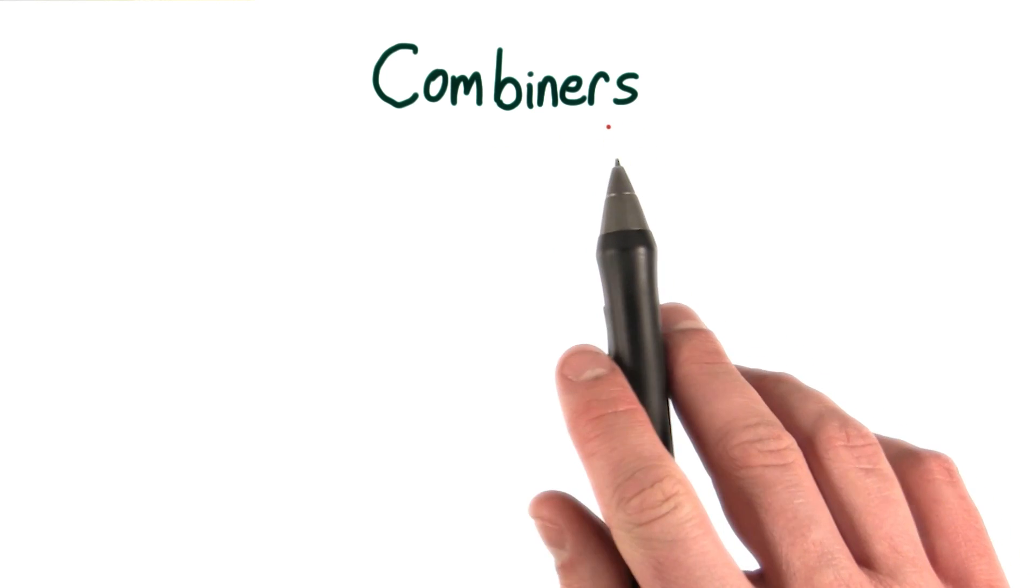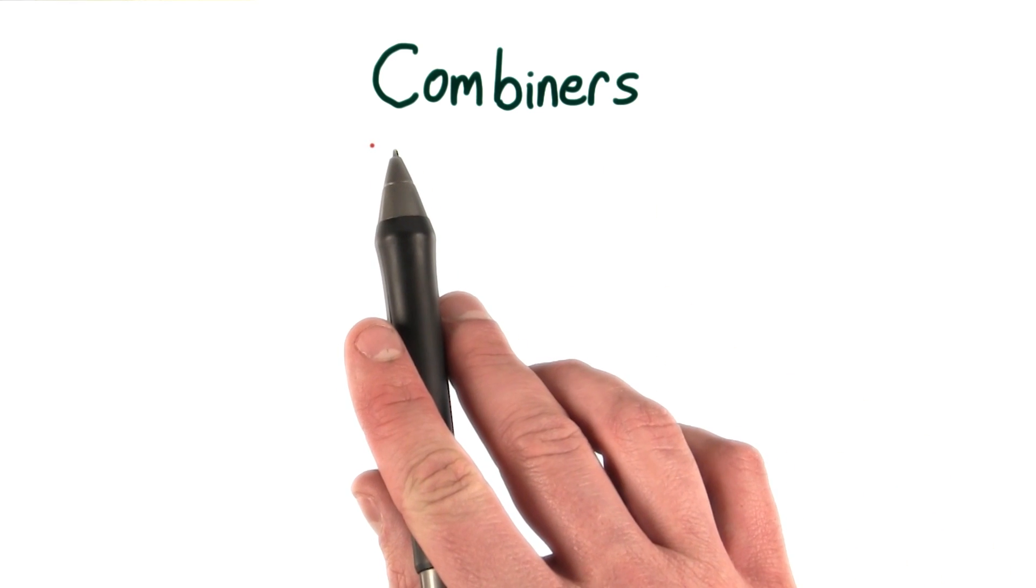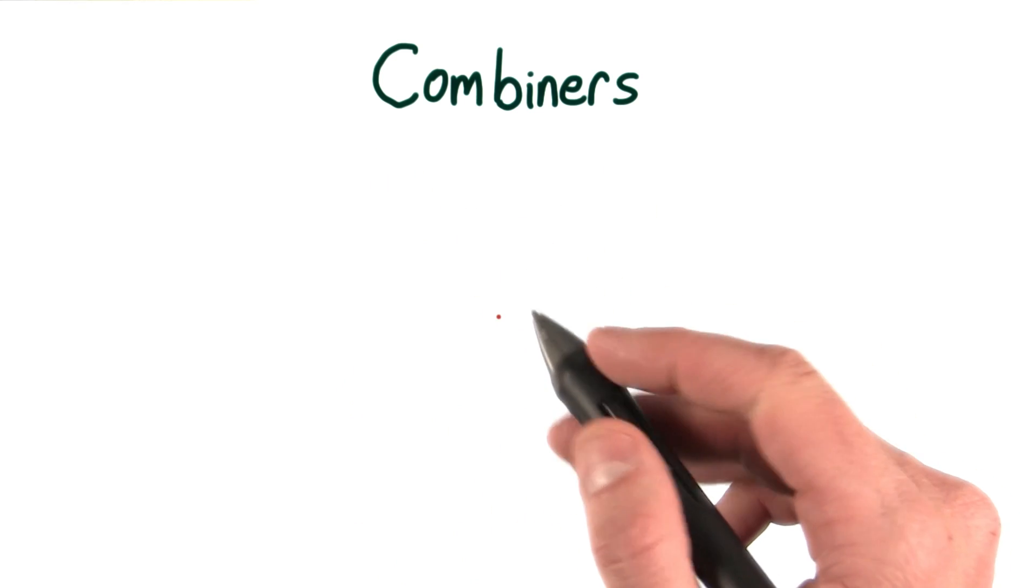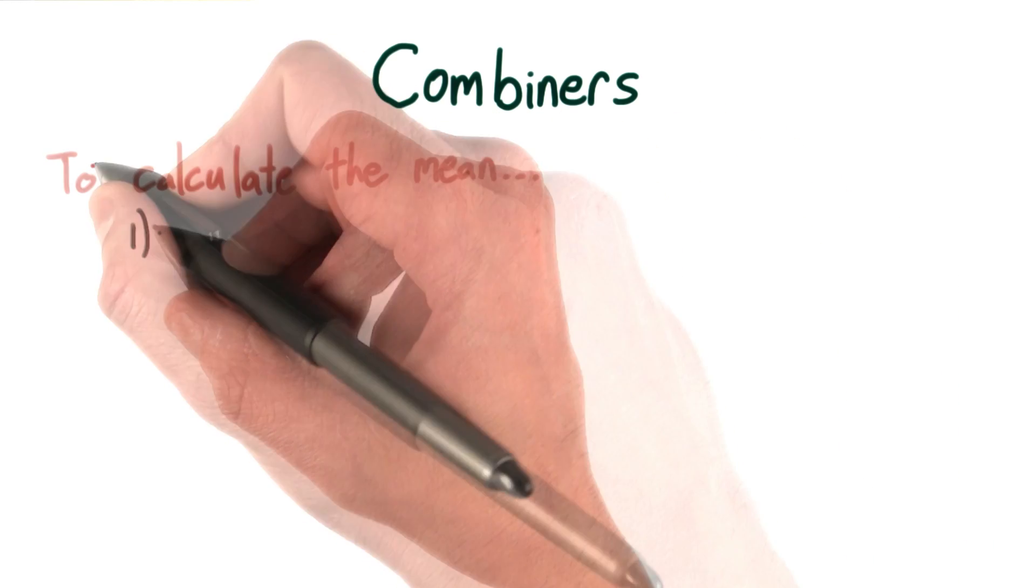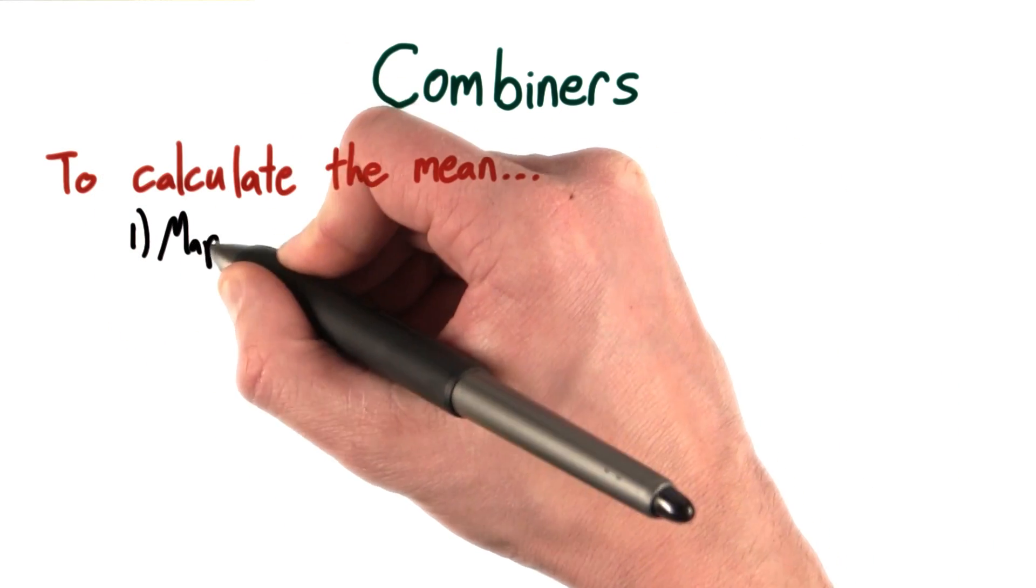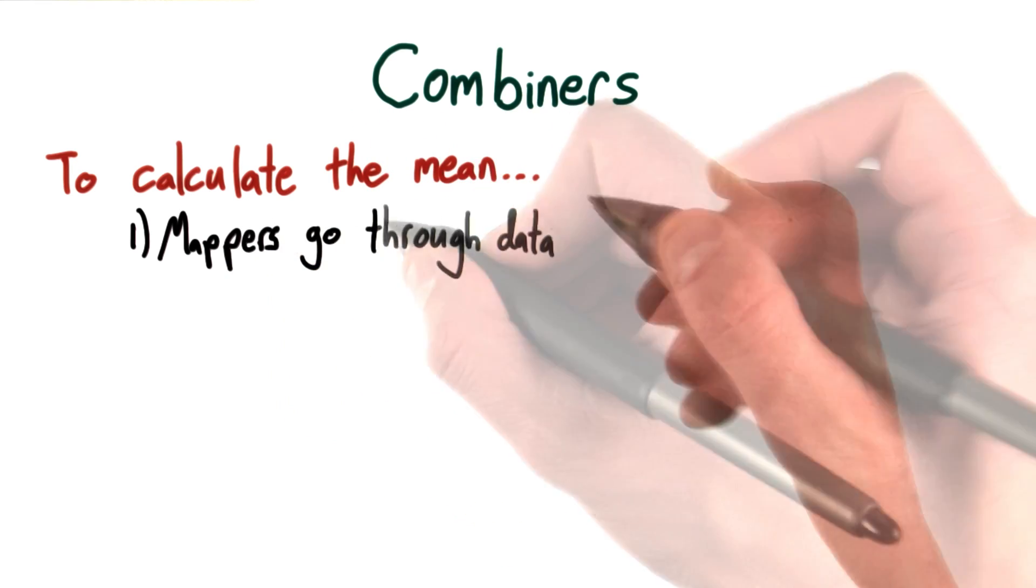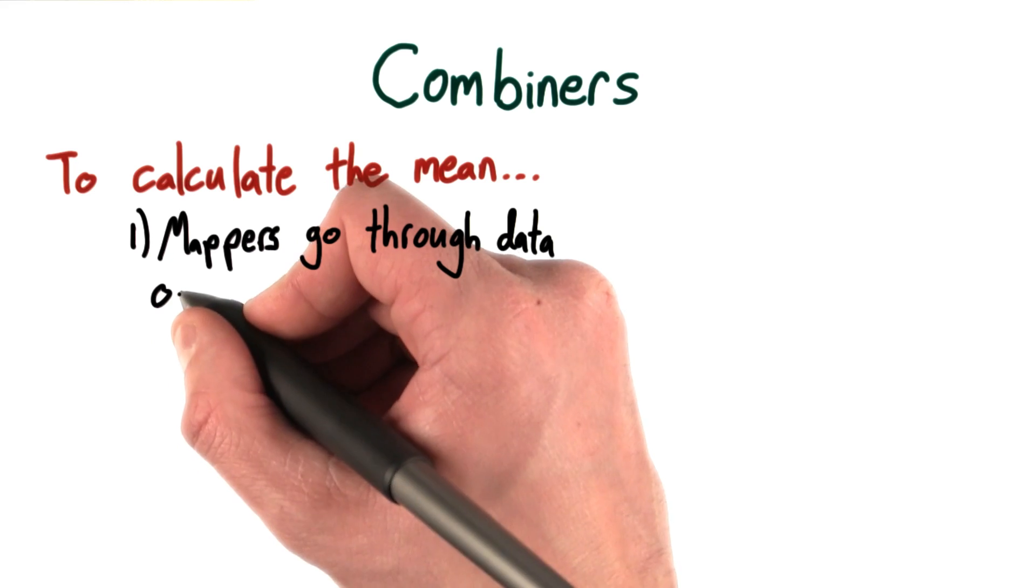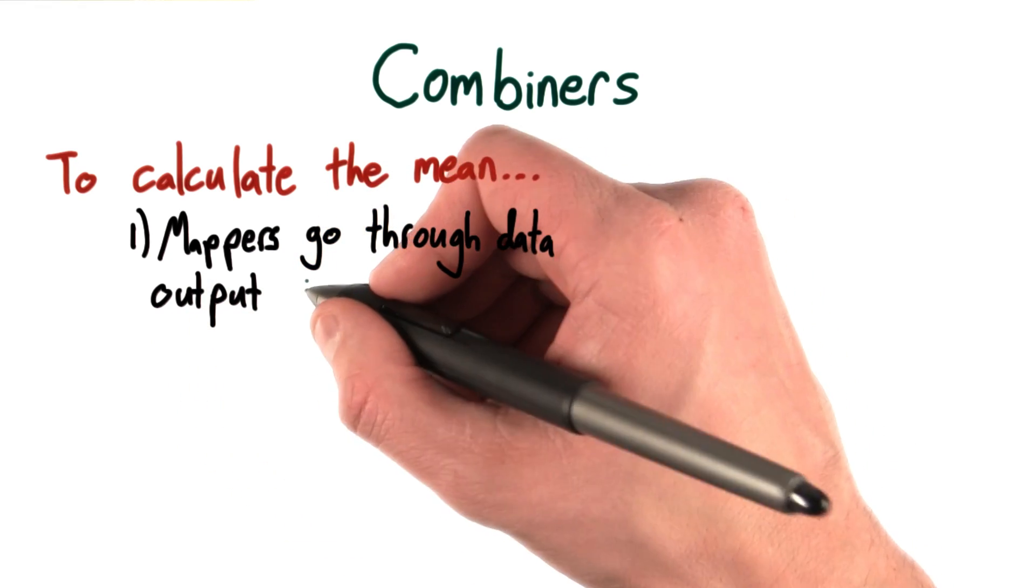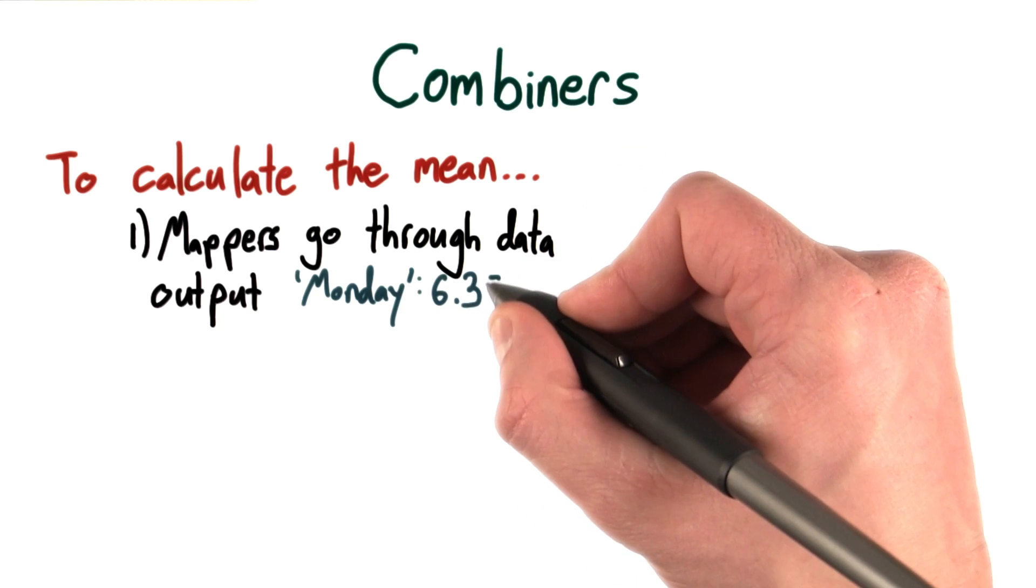Before we do that, let's review how you may have calculated the mean in the last problem. One thing you may have done is something like this. First, you probably had your mappers go through the data and output key value pairs that looked something like day of week, amount spent.